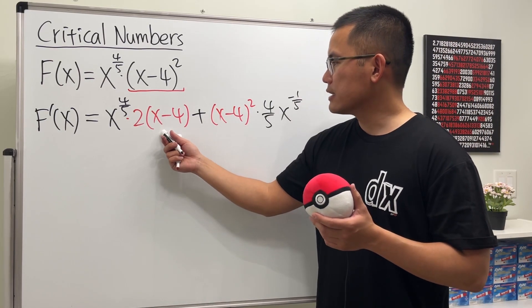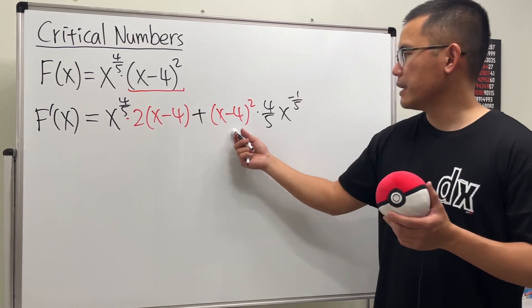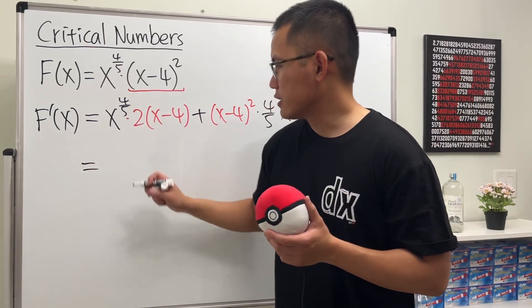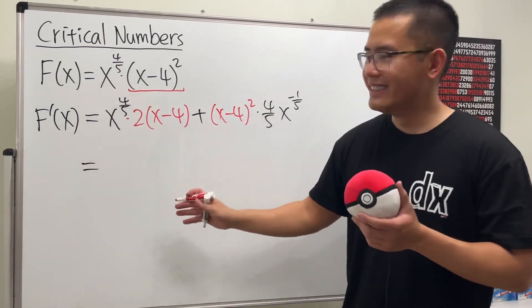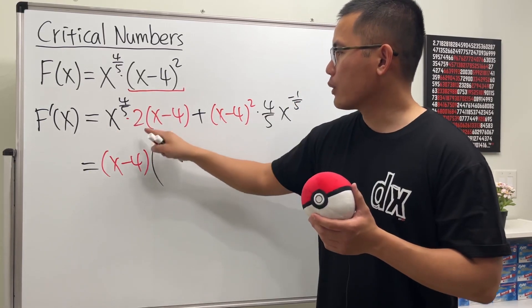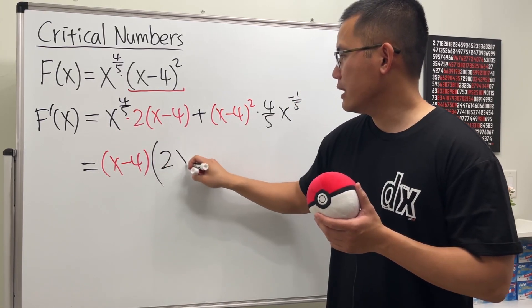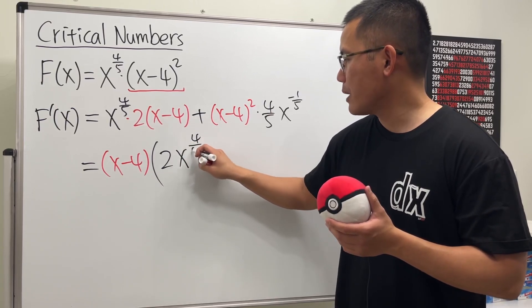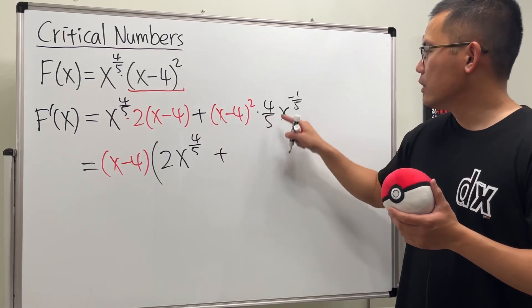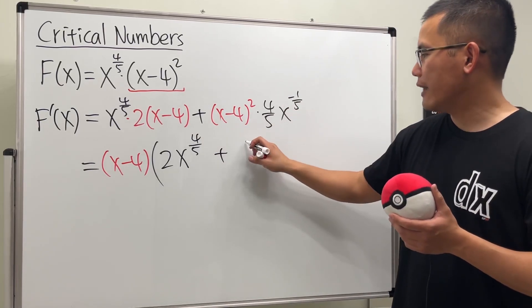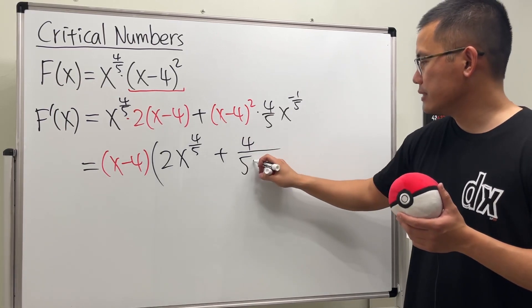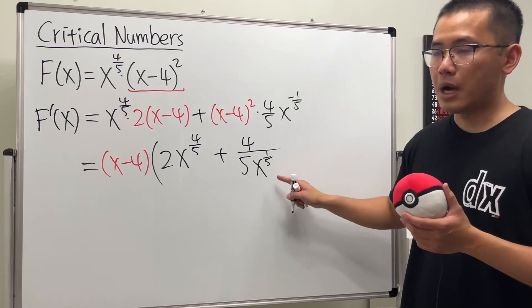Now we see we have (x - 4) to the first power and then (x - 4) to the second power, so you can factor out one of them. Let's hope for the best. We have (x - 4) all the way in the front. For the first part, we'll just have 2x^(4/5) left. For the second part, we'll add—I'm going to fix this—we have 4/5, and I'll also put this down on the bottom, and it will be a positive 1/5 power.